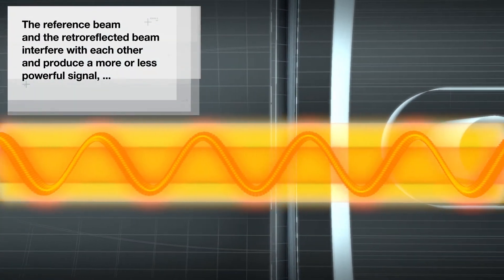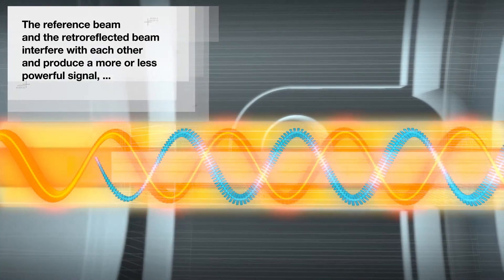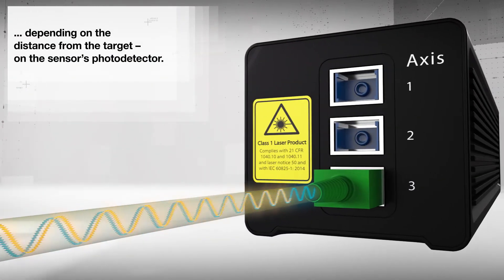The reference beam and the retro-reflected beam interfere with each other and produce a more or less powerful signal depending on the distance from the target on the sensor's photo detector.